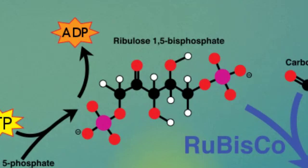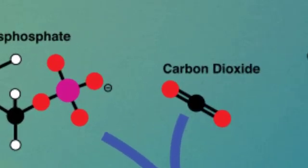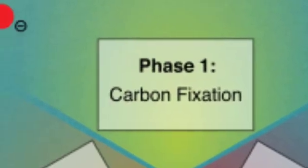The RUBP, the first product which is ribulose 1,5-bisphosphate, is fixed in the presence of carbon dioxide to form PGA or we call it 3-phosphoglycerate. This process is called carboxylation or we also call this process carbon fixation.